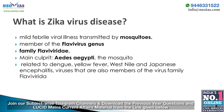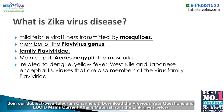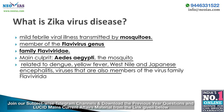What is Zika virus disease? Zika virus infection is a mild febrile viral illness transmitted by mosquitoes. The Zika virus is a member of the Flavivirus genus in the family Flaviviridae. The main culprit is the Aedes aegypti mosquito. It is related to dengue, yellow fever, West Nile, and Japanese Encephalitis, all of which are also members of the Flaviviridae family.